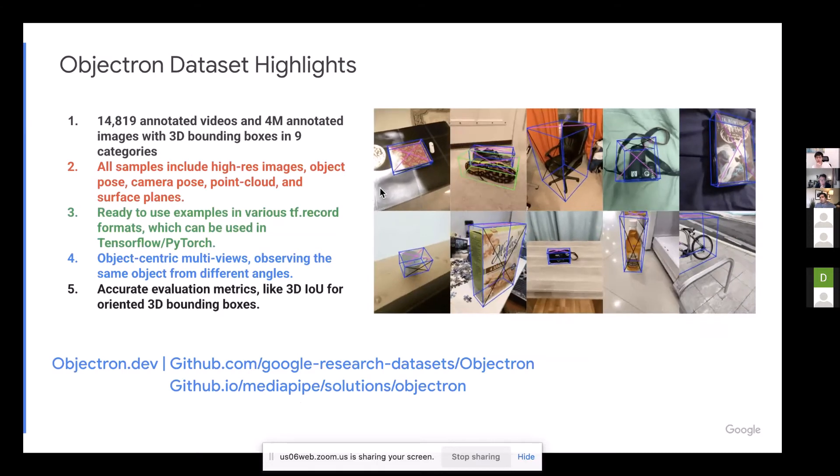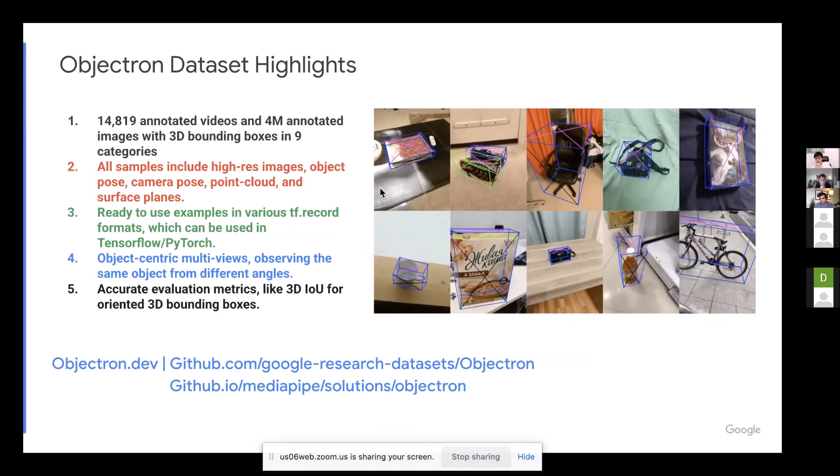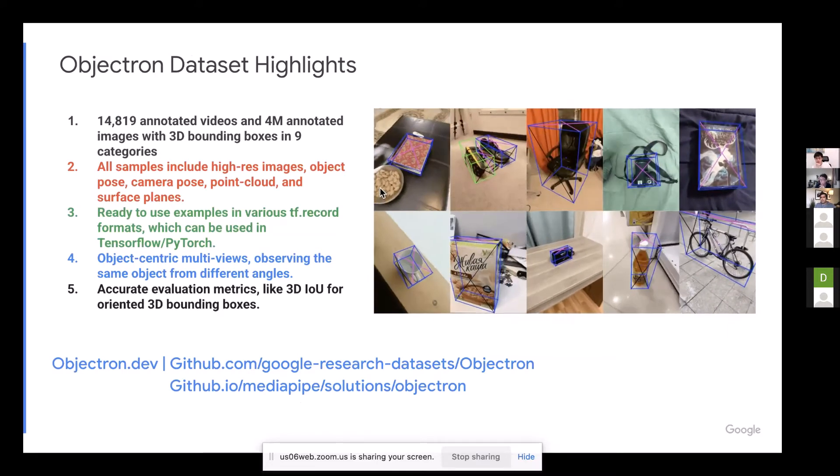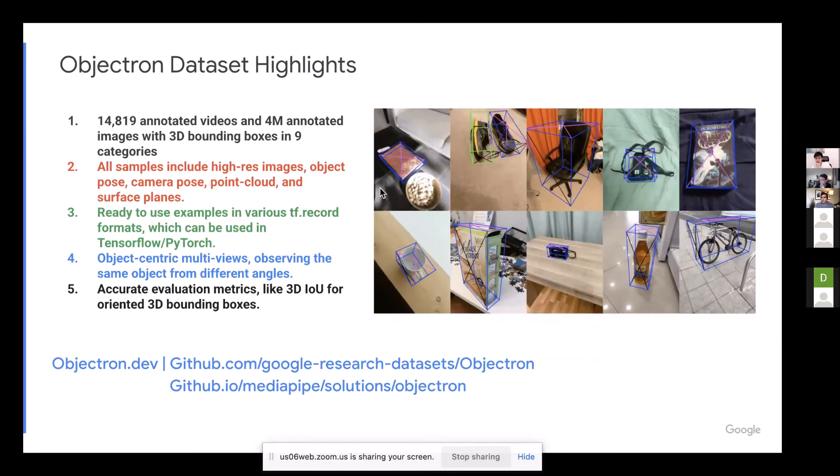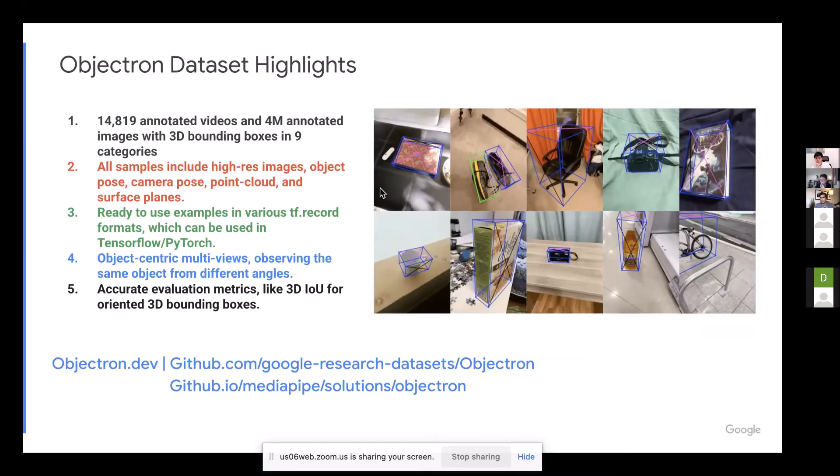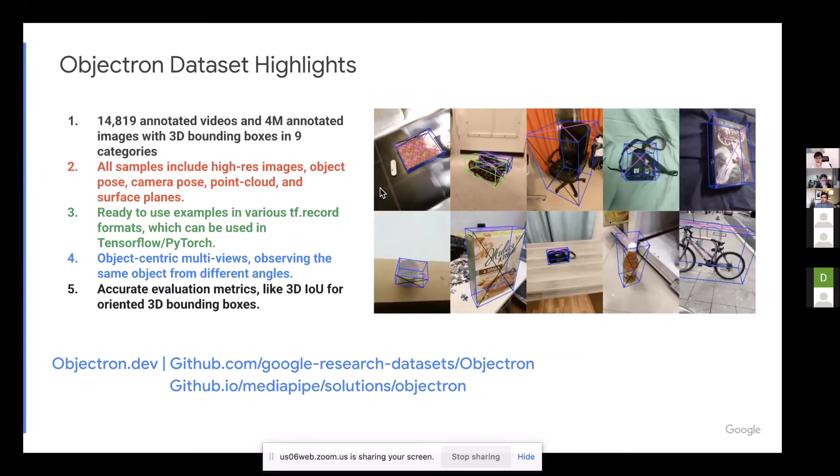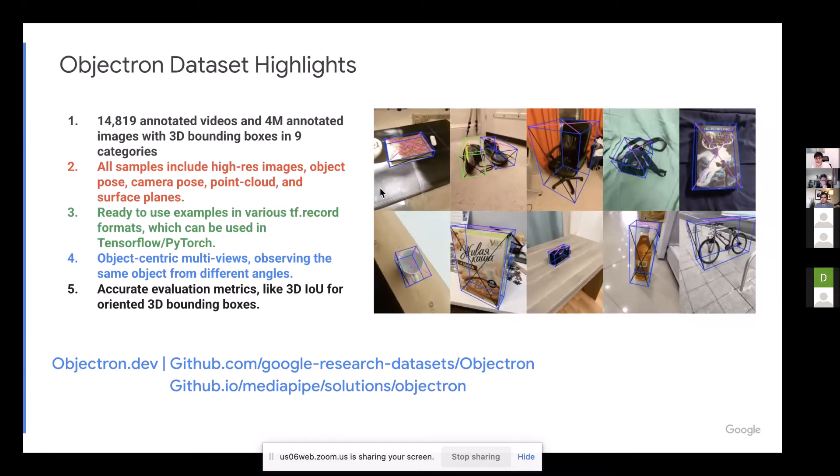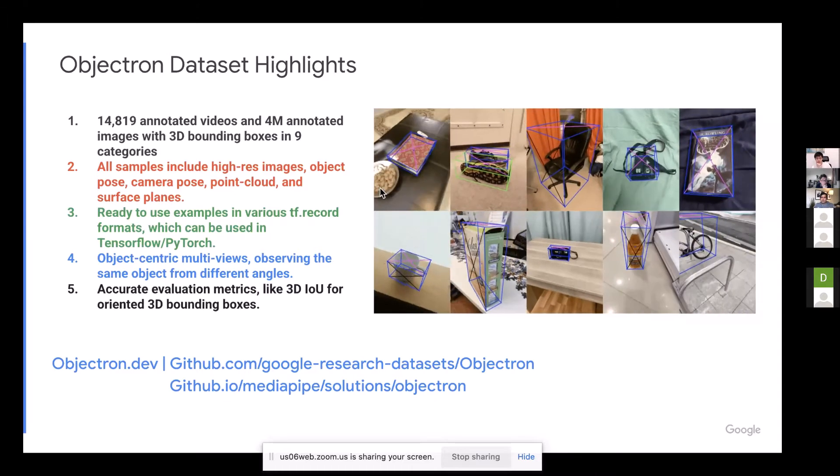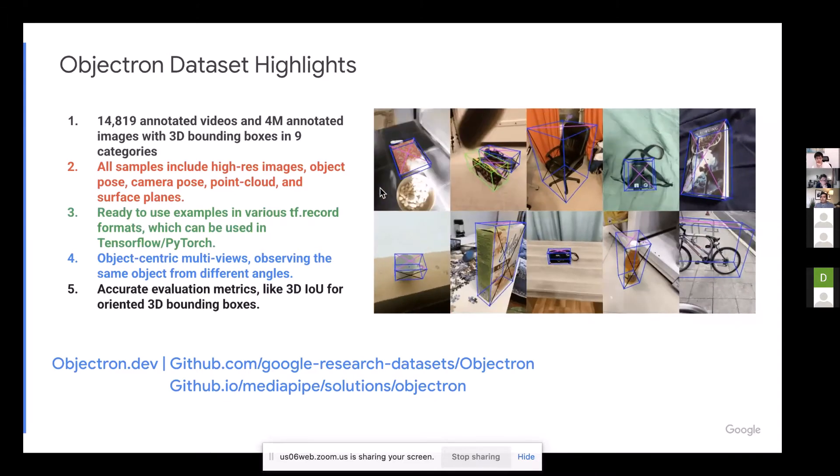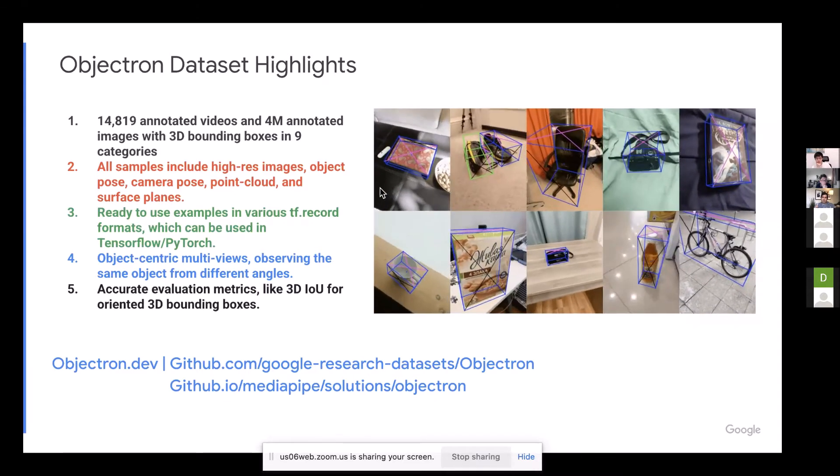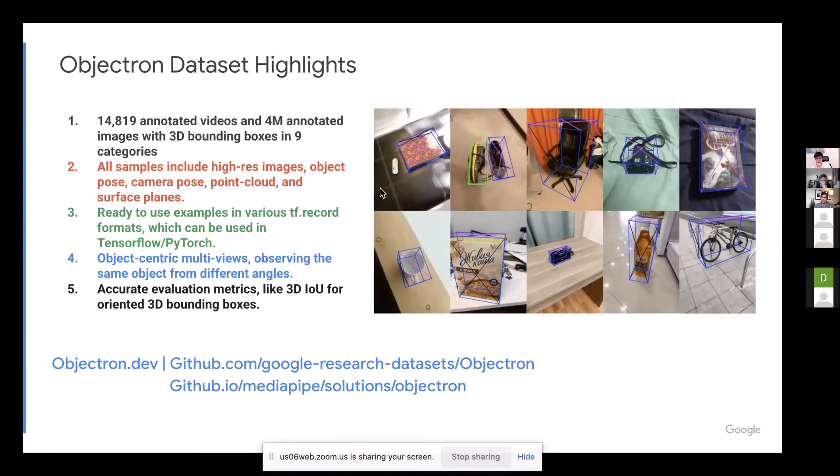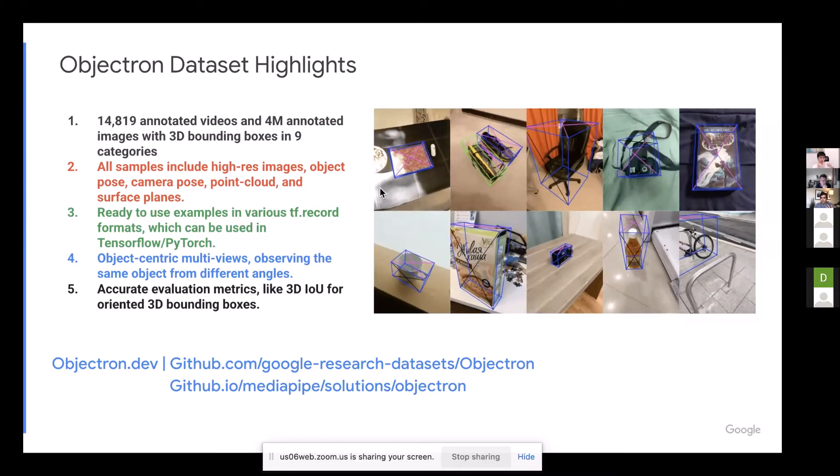So in order to help with the 3D object understanding, we created this large dataset. And one thing that is shared in this dataset is this. It's a collection of videos, and they're all object-centric. Like they would look at the same object from different views. And we have annotated the pose for this. And we also have the camera poses, point cloud, AR point cloud, and stuff like this.